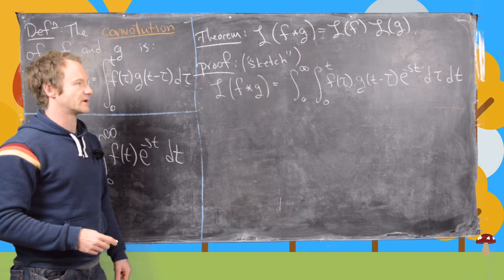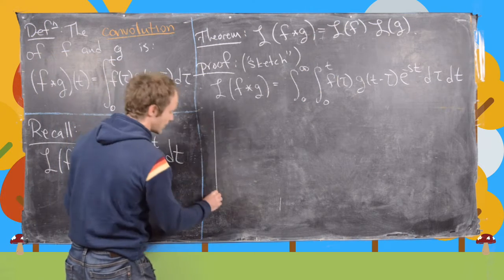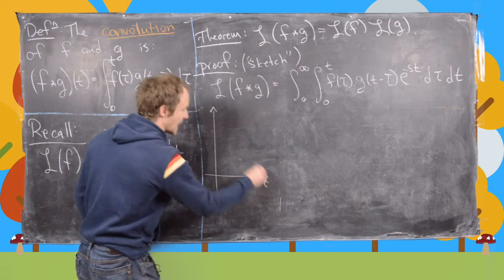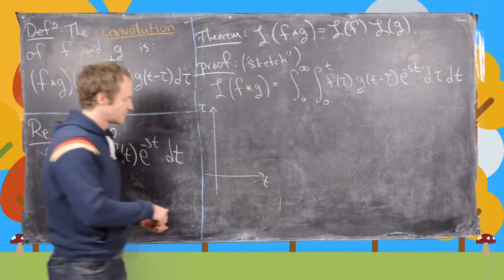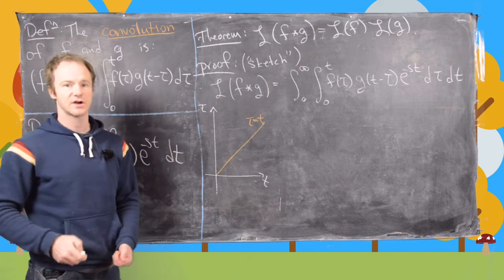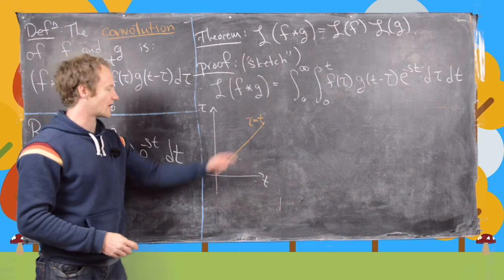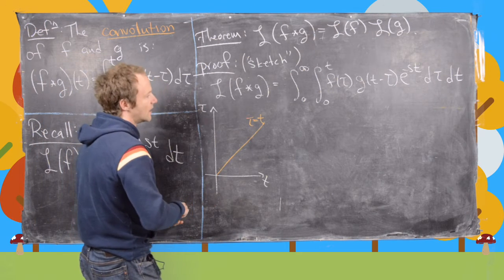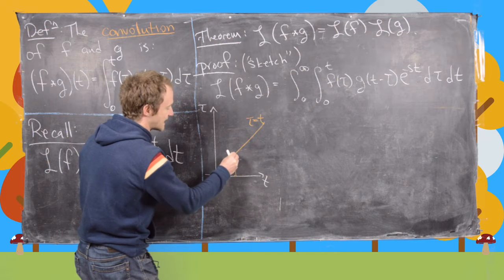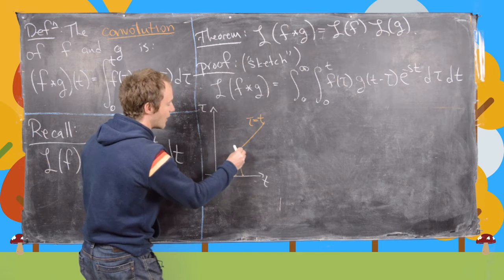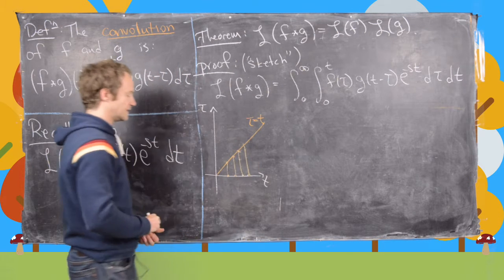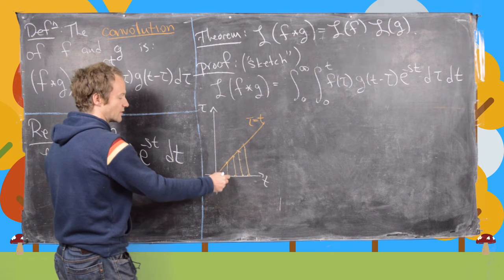The big trick here is we want to switch the order of integration, and to motivate that I'm going to draw a picture. We have the t axis down here and the tau axis up here, along with the line tau equals t. Our inner integral goes from zero to t for the tau values, and the outer integral goes from t equals zero to infinity.